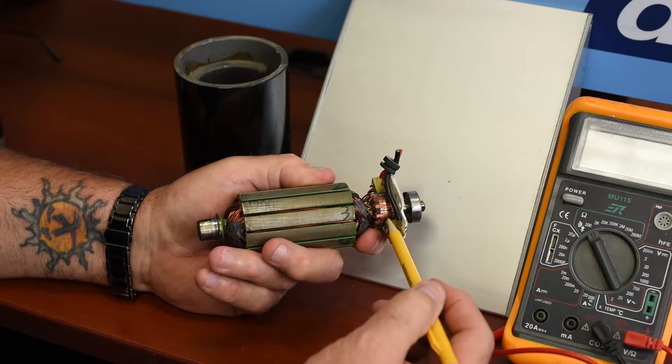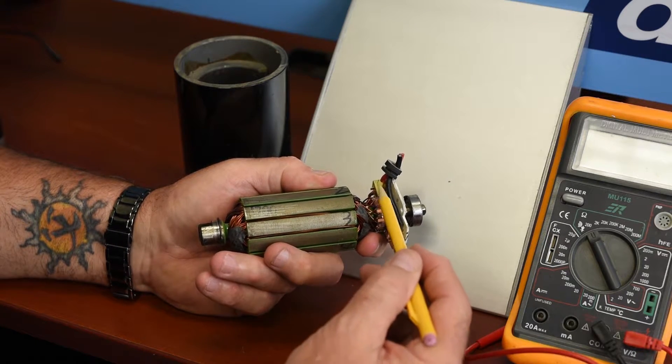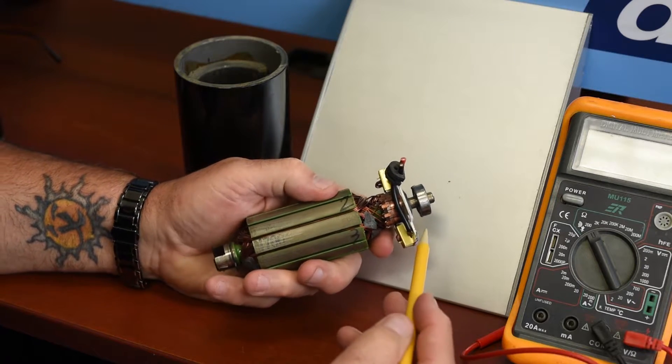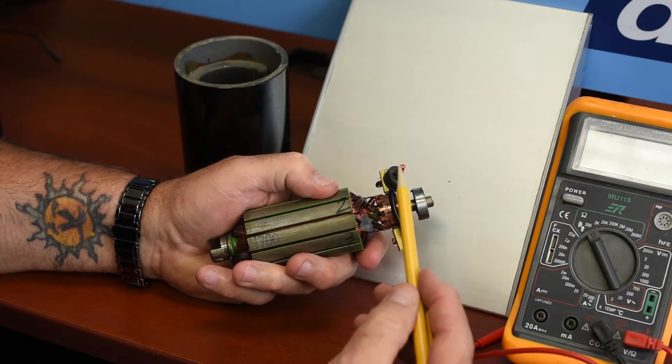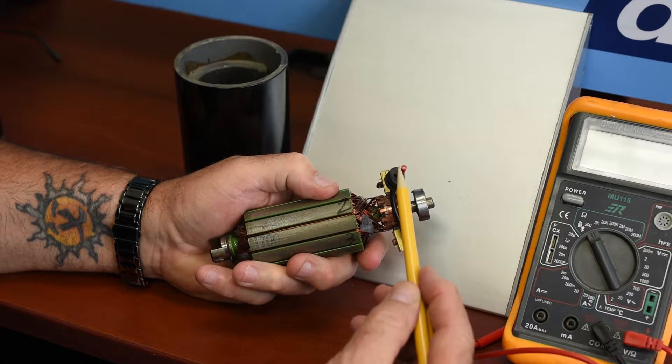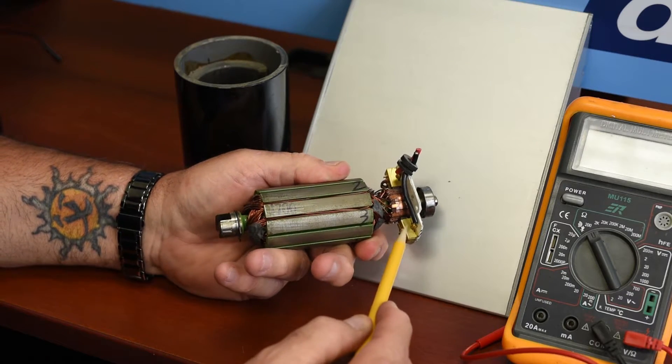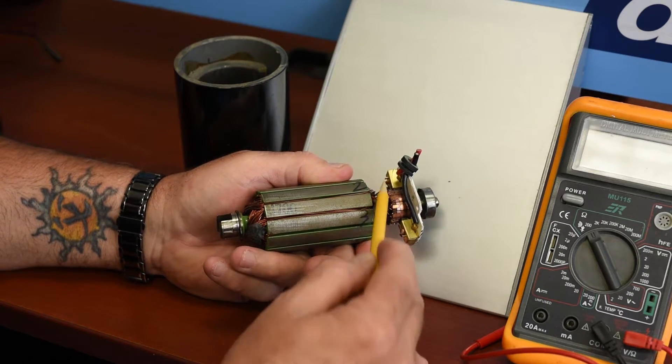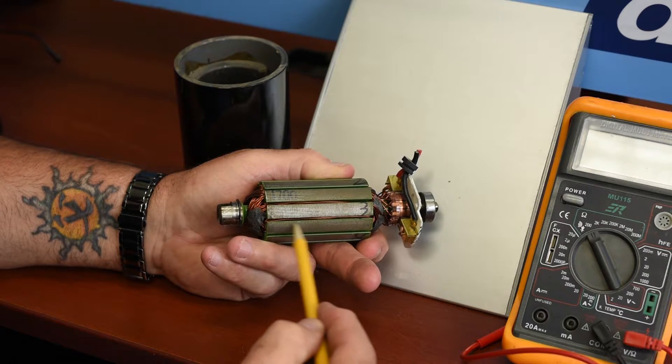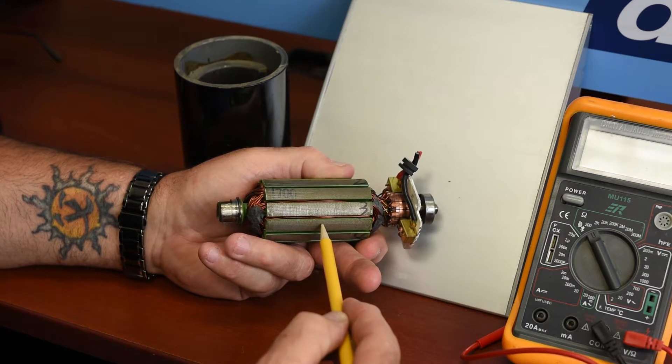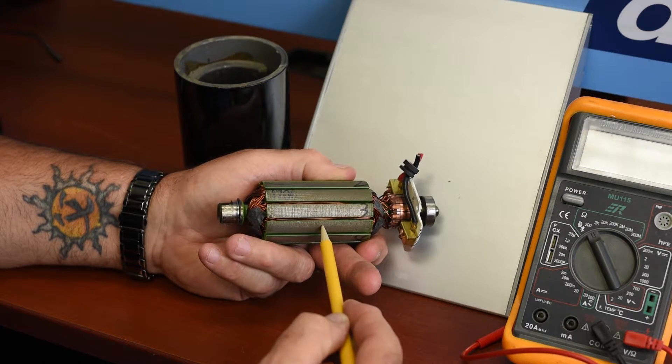The brushes make contact with each set of commutator contacts. The way the motor works is that when you energize the contacts, you put power to the wires, and the power comes in through the brushes to the commutators. It energizes a set of coils and makes the cores themselves a magnet.